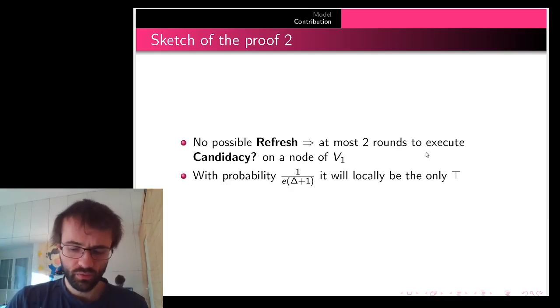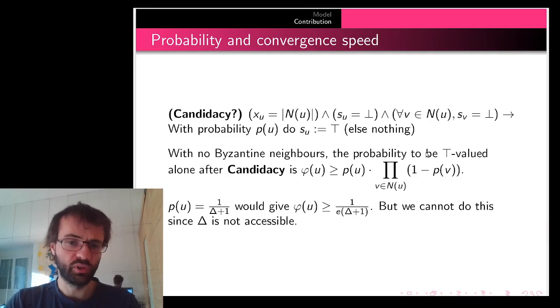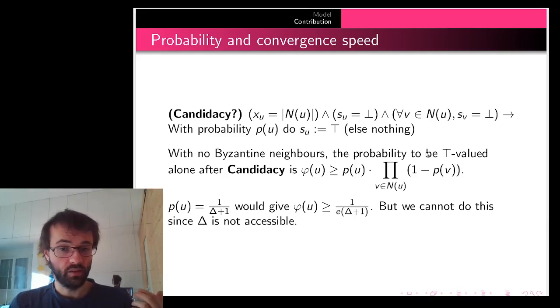To tell more about that specific probability, we observe that when a node with no Byzantine neighbors is executed and uses the candidacy rule, the probability that it is top-valued after the transition but with no top-valued neighbors is φ(u), which is greater than p(u), the probability to be itself at top,